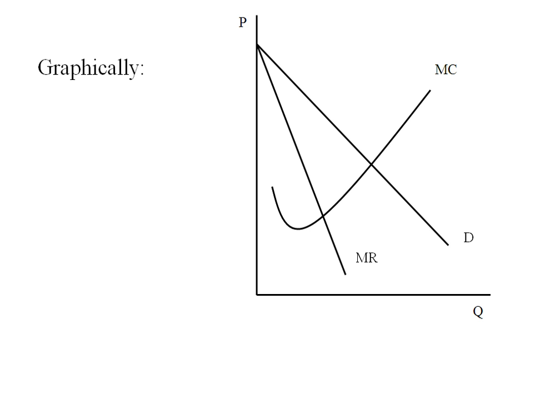We're looking for the intersection of marginal revenue and marginal cost, and that gives us the profit maximizing level of output, Q star.